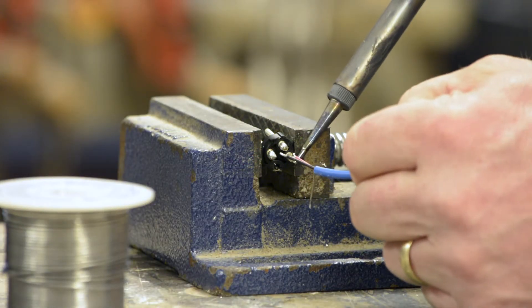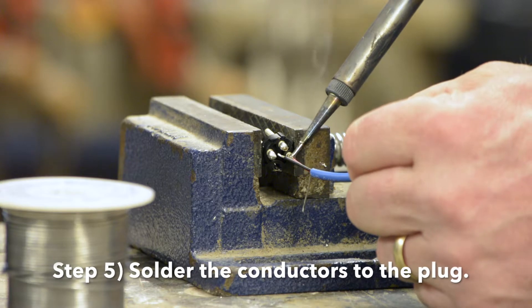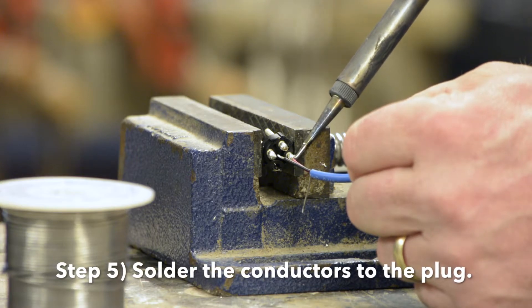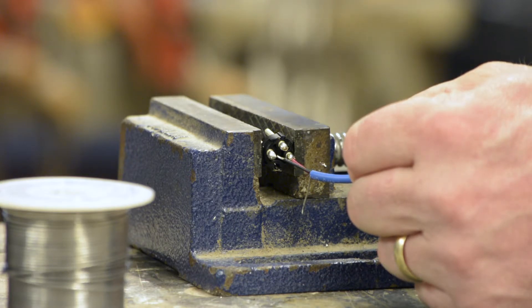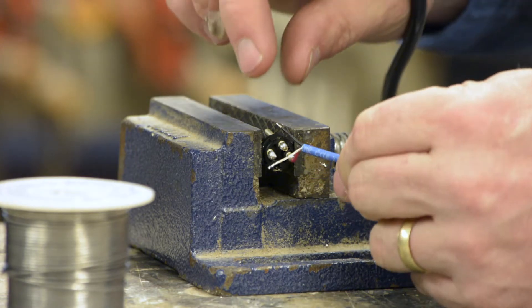With that solder pocket still warm, I put the conductor inside there, make sure that it is melted well, and then let that flash over. It takes about 5 seconds.